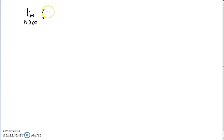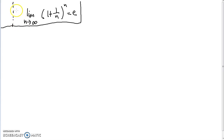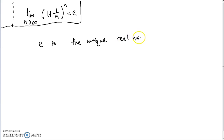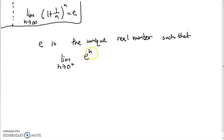What we want to do is prove an equivalent definition of Euler's number. So, assuming the original sequence definition of Euler's number, we want to prove that E is the unique real number such that the limit as H approaches 0 from the right-hand side of (E to the H minus 1) over H is equal to 1.